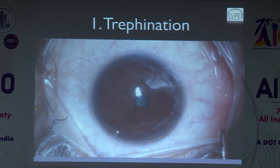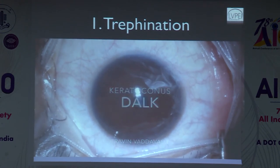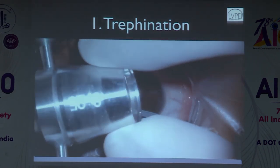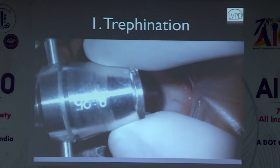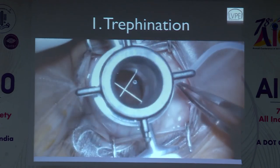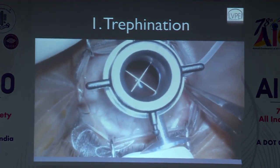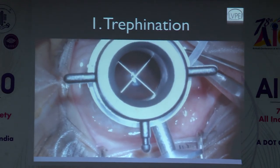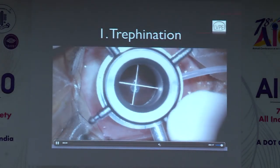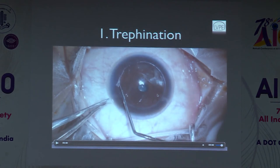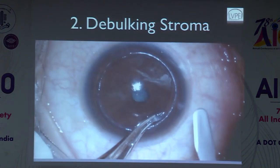The steps of DALK: first, use a vacuum trephine and mark the center of the cornea — centration is critical in keratoconus to ensure adequate cone inclusion. A Coronet vacuum trephine gives a precise, sharp trephination. Ensure you don't perforate. Trephinate deep enough for a good ledge for sutures. Second, debulk the stroma — this helps because when you inject the air bubble you are in the posterior stroma and have a higher chance of bubble formation. Avoid debulking if there is deep scarring.